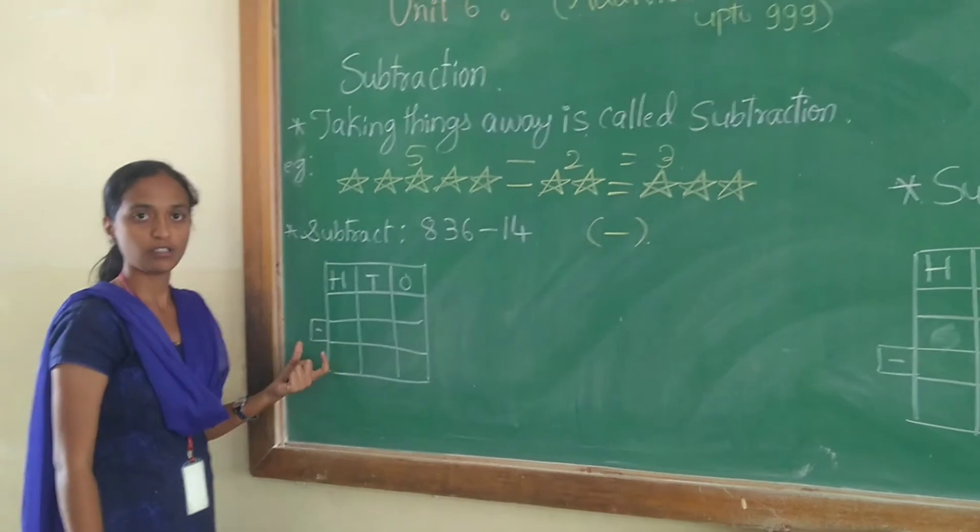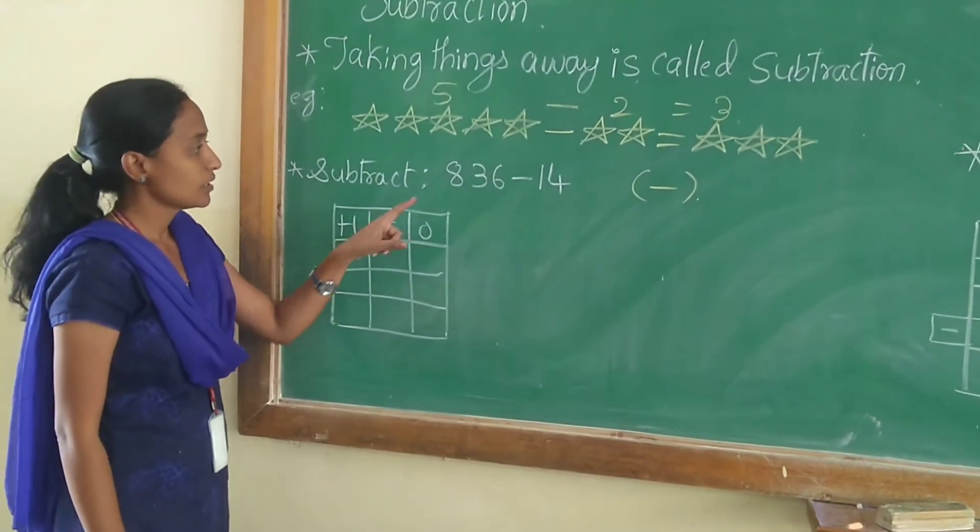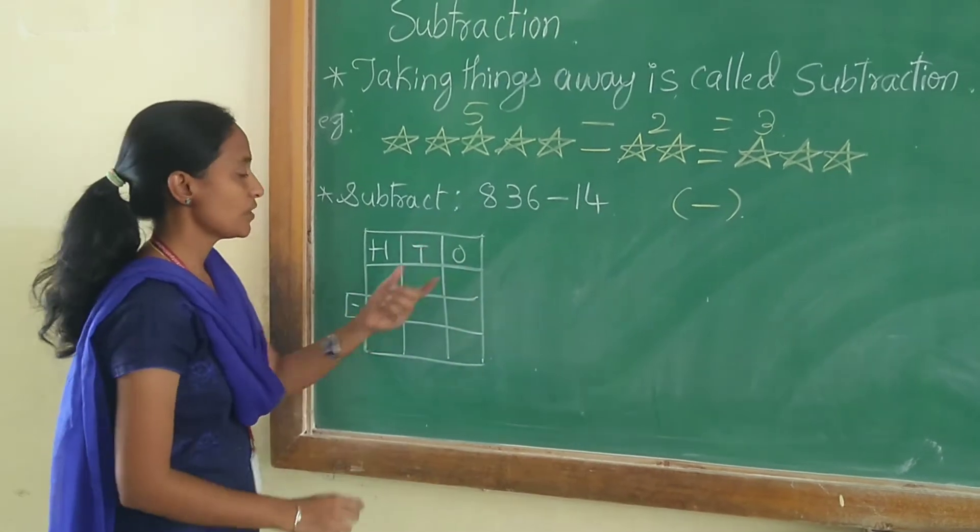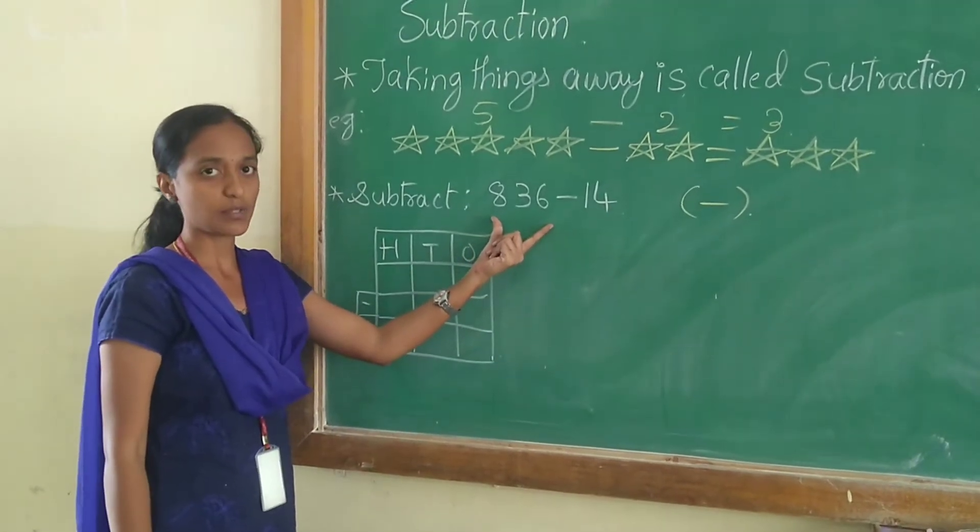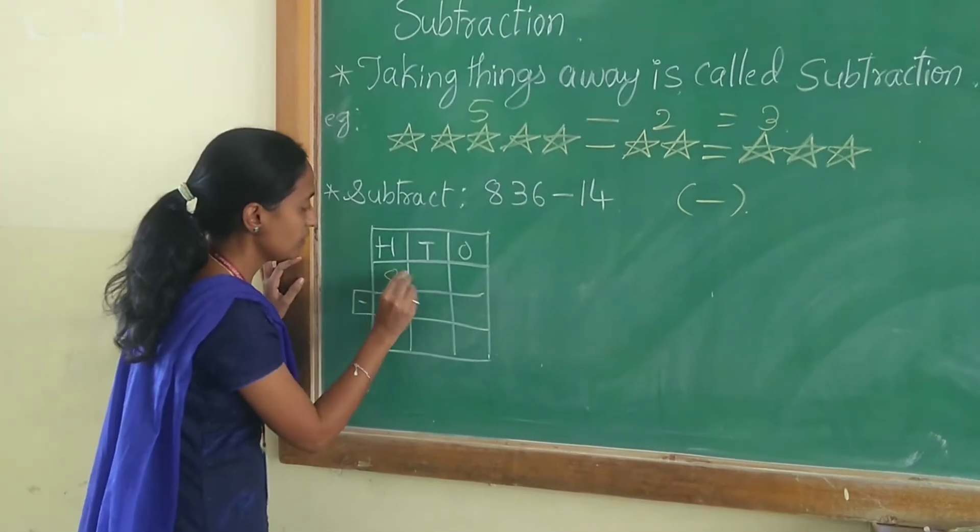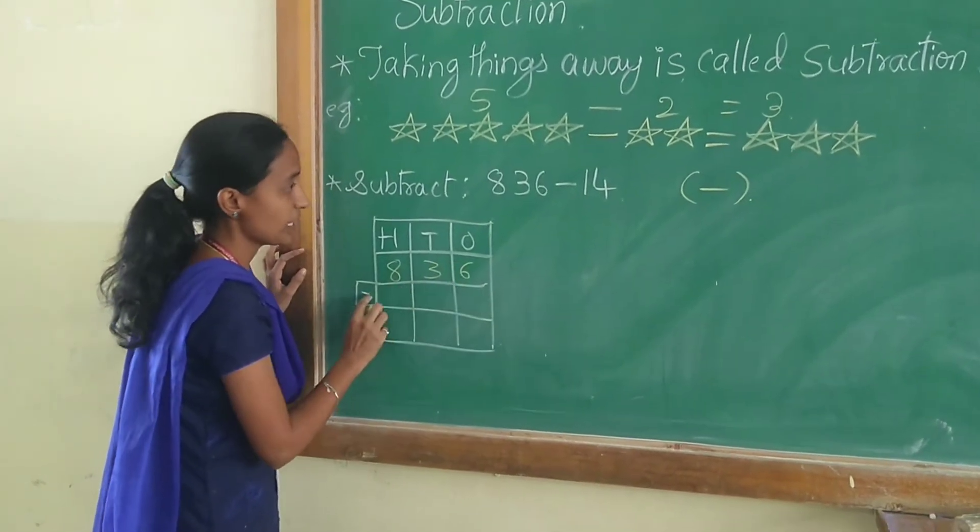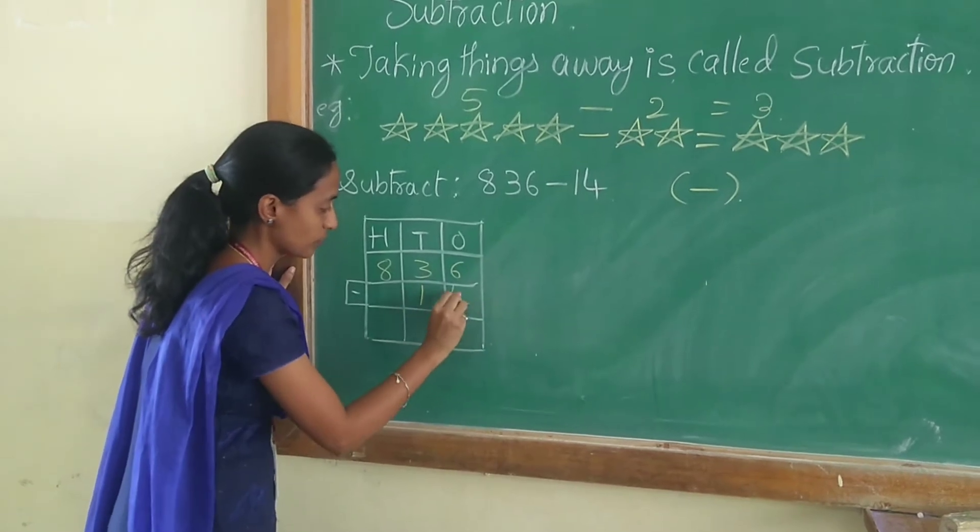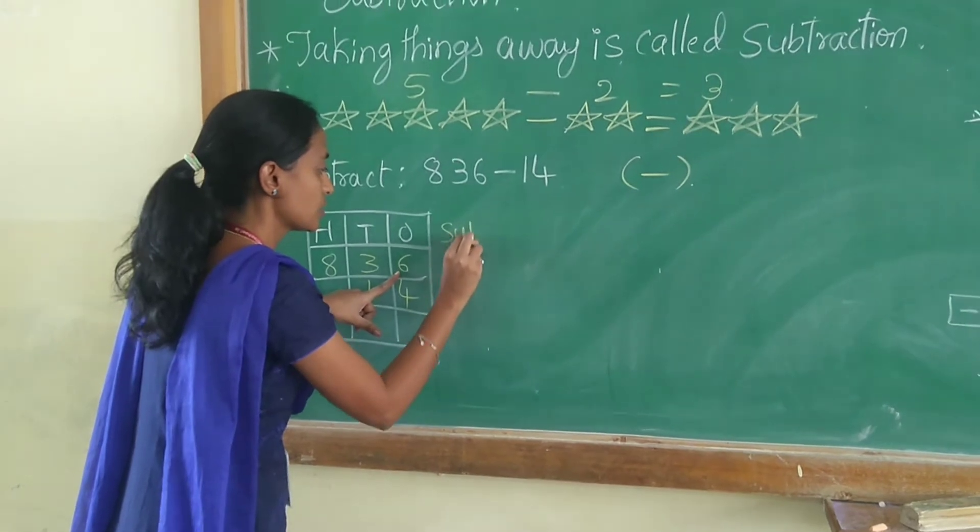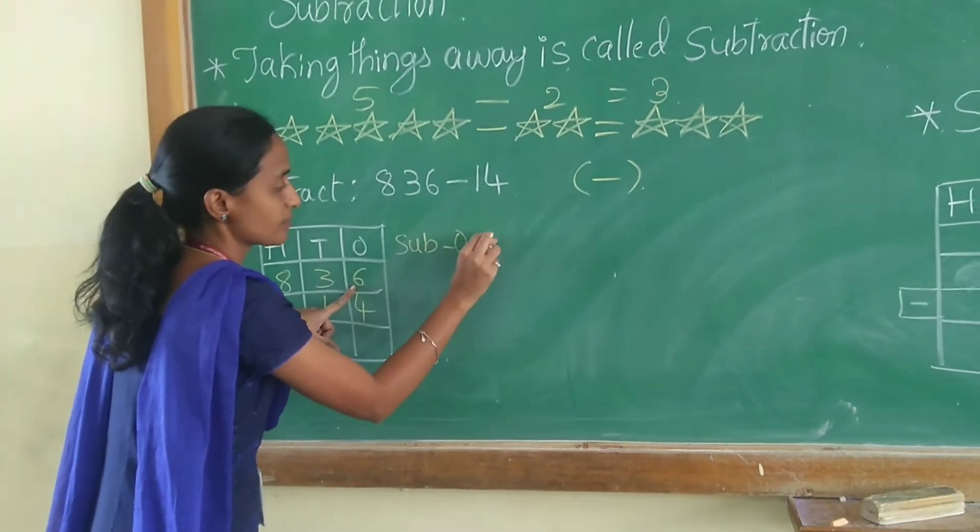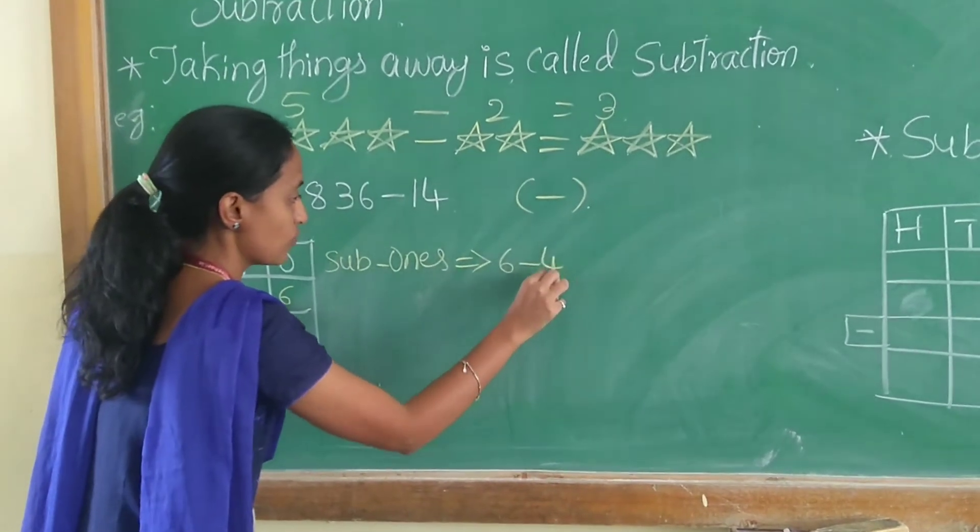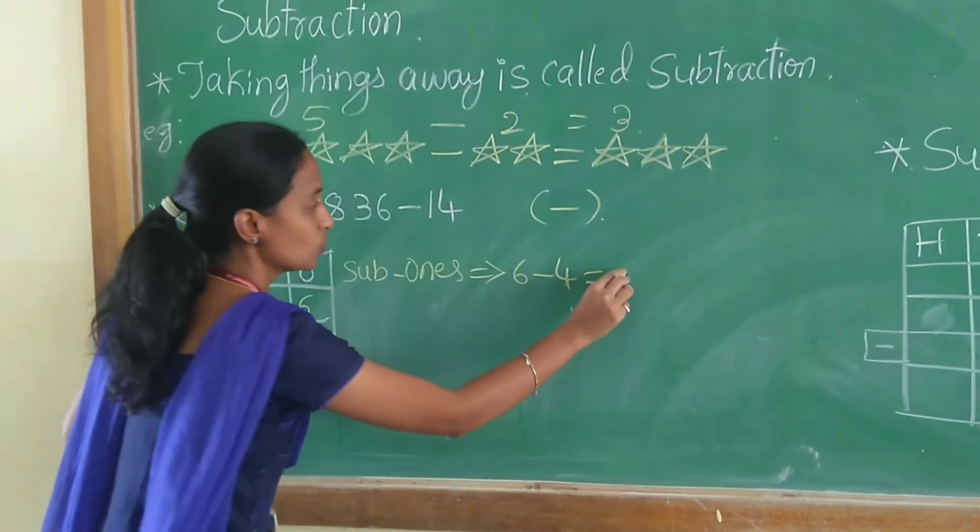Let us solve an example on subtraction. Subtract 836 minus 14. First we need to place the given numbers in the respective column. So 836 minus 14. First subtract 1s.